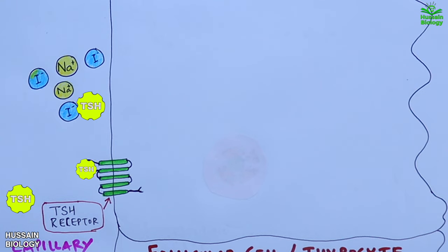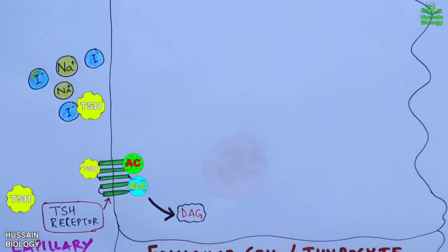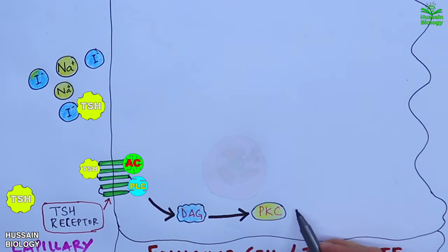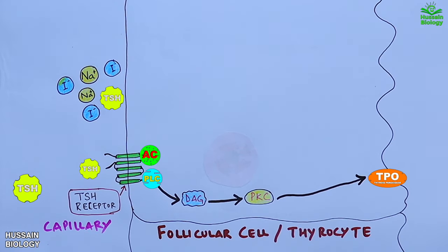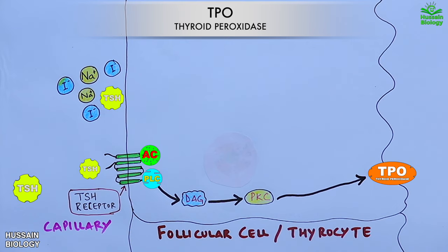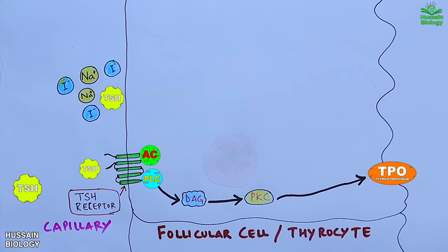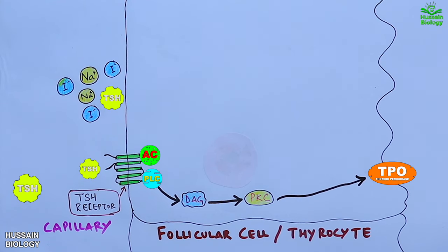Upon TSH binding, the receptor is activated. This generates active adenyl cyclase and active PLC (phospholipase C). The PLC mediates signaling via the DAG molecule to PKC, resulting in the expression of TPO (thyroid peroxidase) on the apical membrane of the follicular cell. Later in this video we will see the function of this TPO.